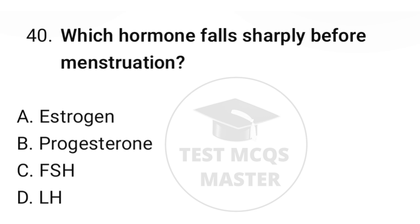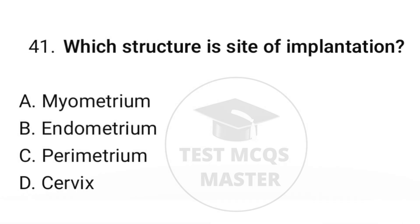Question number forty: which hormone falls shortly before menstruation? The correct option is B, progesterone. Question number forty-one: which structure is the site of implantation? The correct option is B, endometrium.